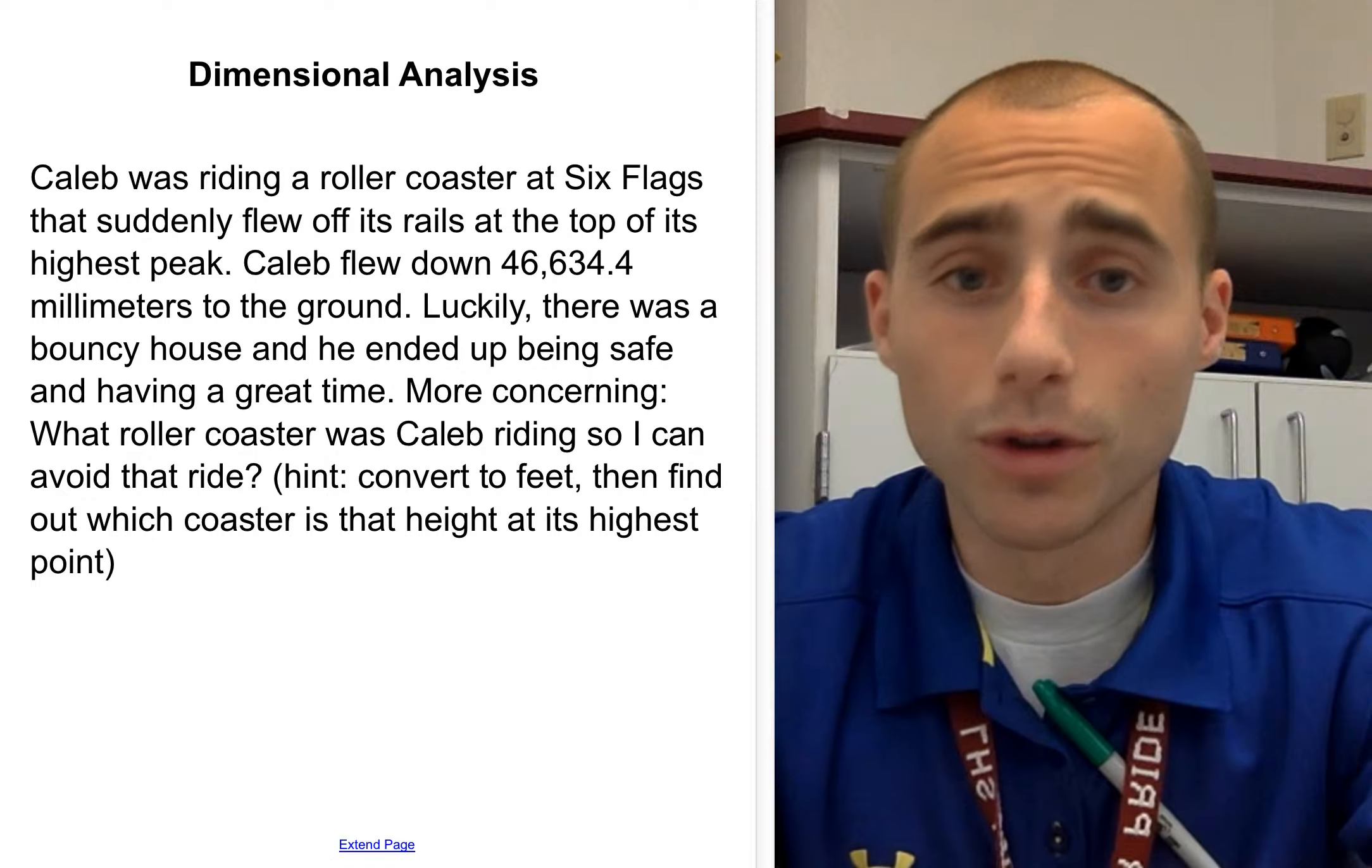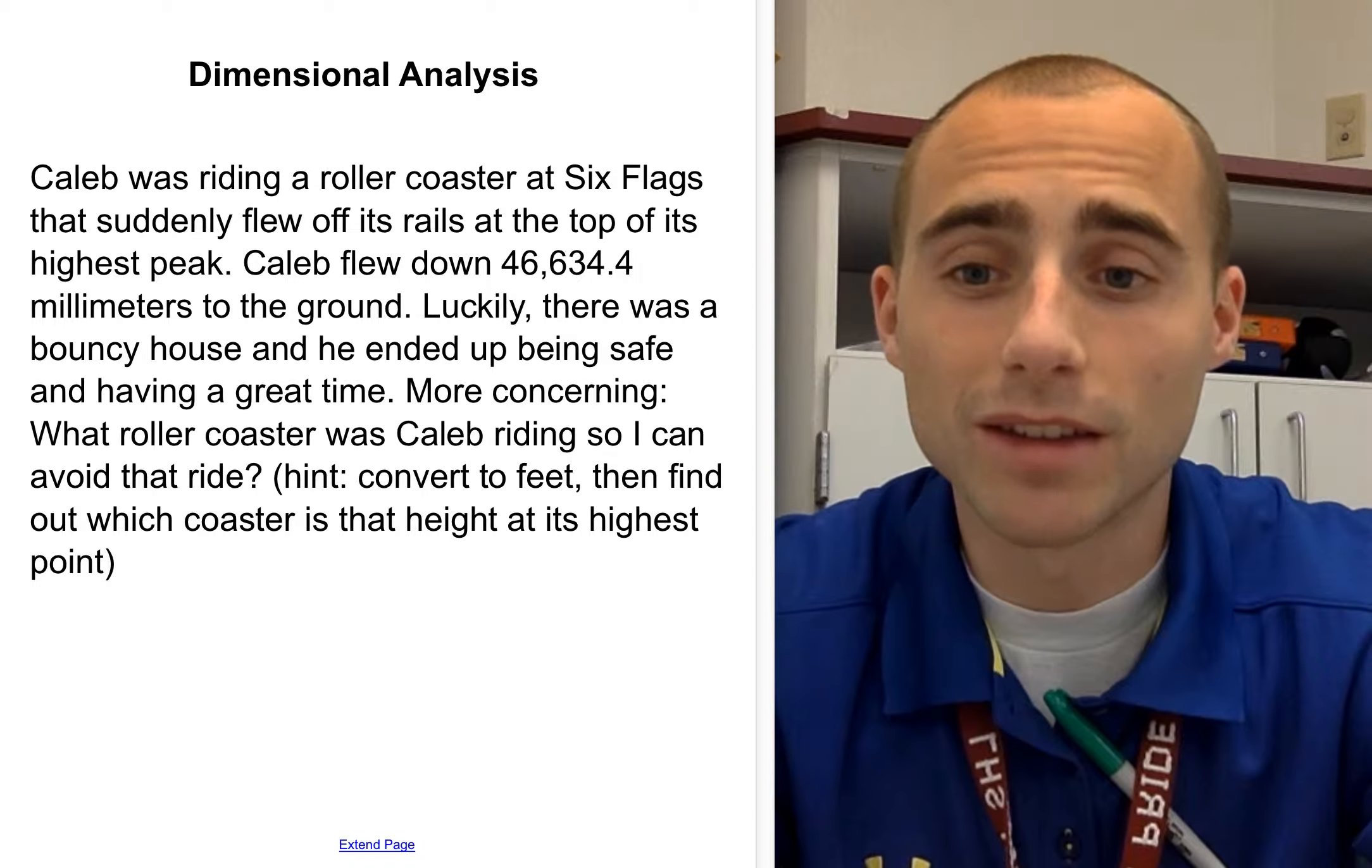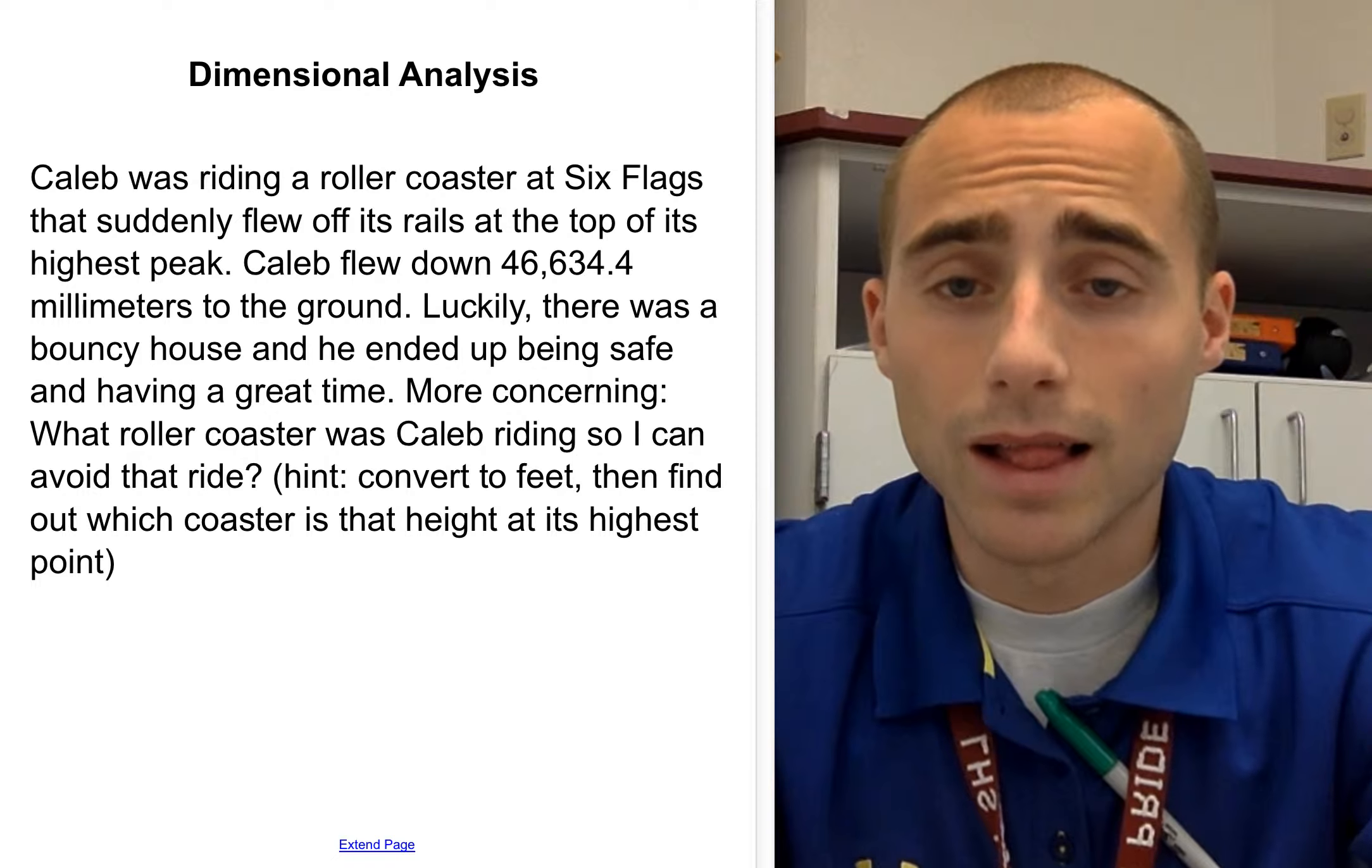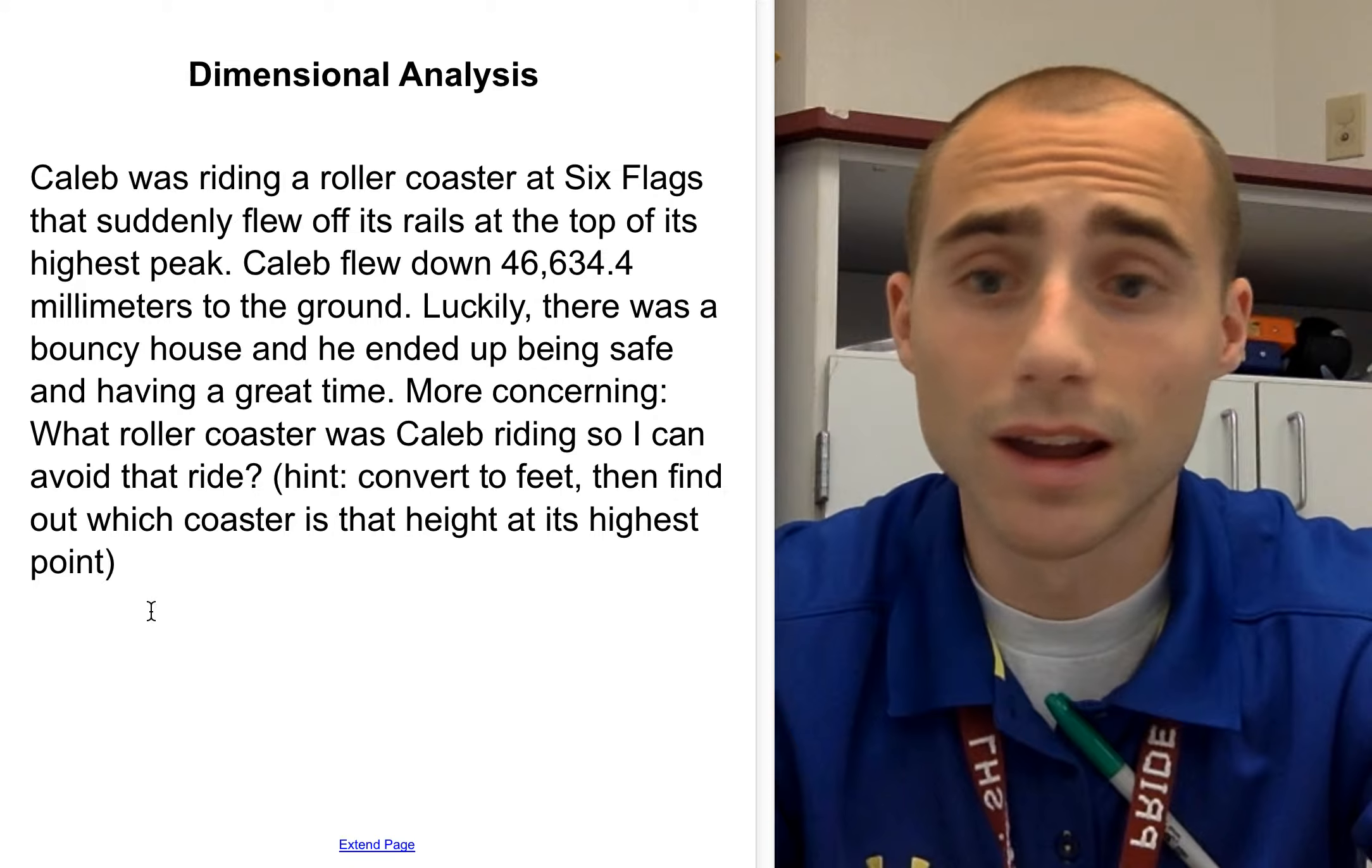Next one. Caleb was riding a roller coaster at Six Flags. It suddenly flew off its rails at the top of its highest peak. Caleb flew down 46,634.4 millimeters to the ground. Luckily, there was a bouncy house and he ended up being safe and having a great time. So he fell off the coaster, landed on the bouncy house, and it all worked out. More concerning though, is what roller coaster was Caleb riding so I can avoid it in the future? How you're going to solve this? You have to convert from millimeters to feet. Then you need to find out which roller coaster at Six Flags Over Texas is actually that tall at its highest point. And you got to warn everybody not to ride that roller coaster. And you got to tell me what that roller coaster is.